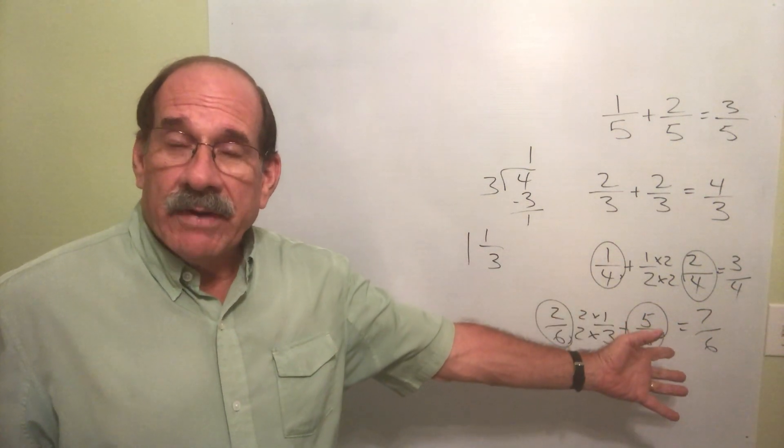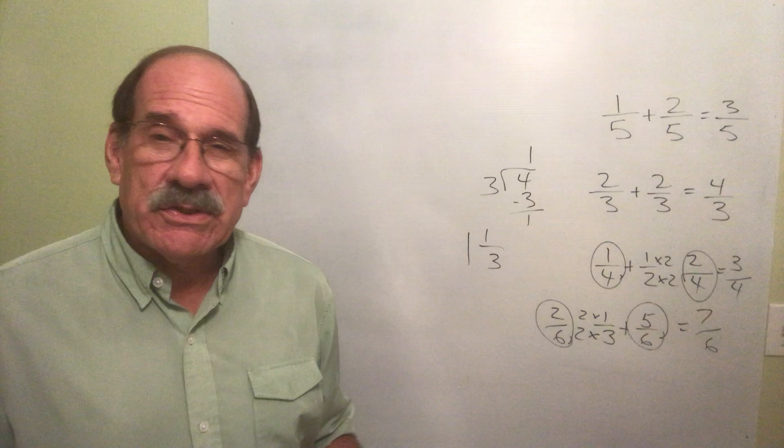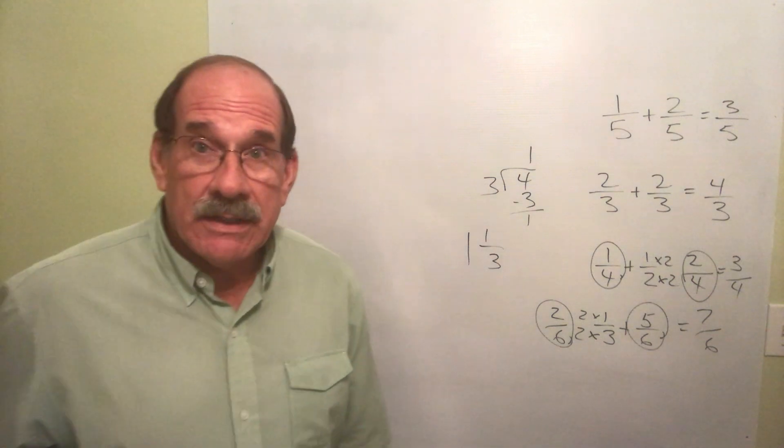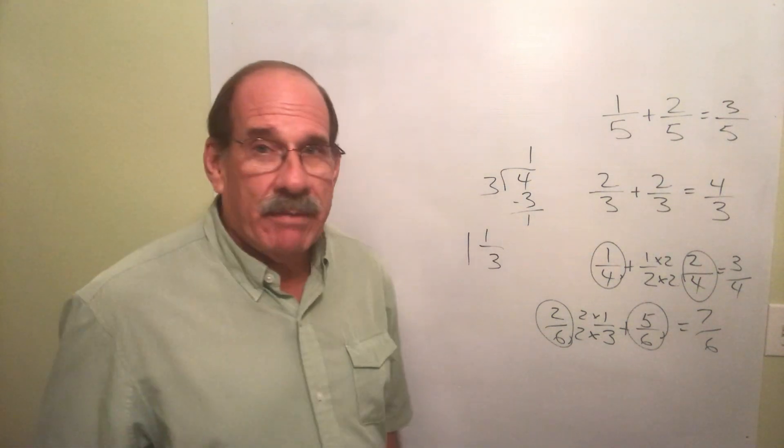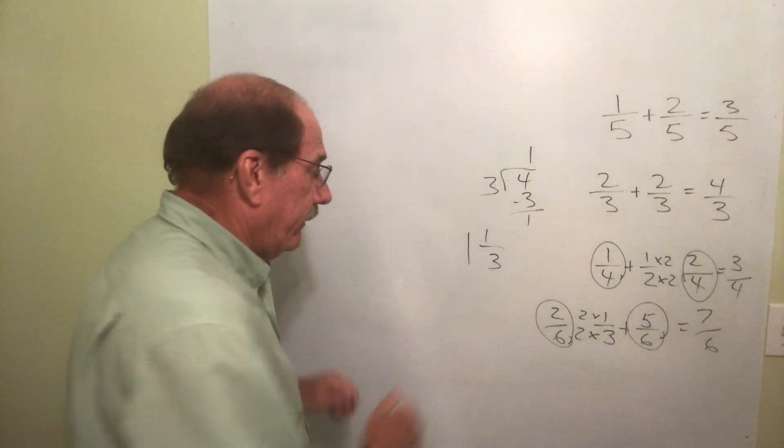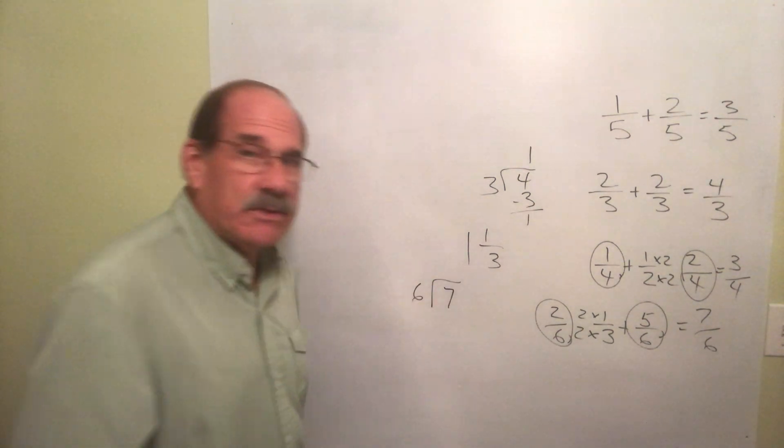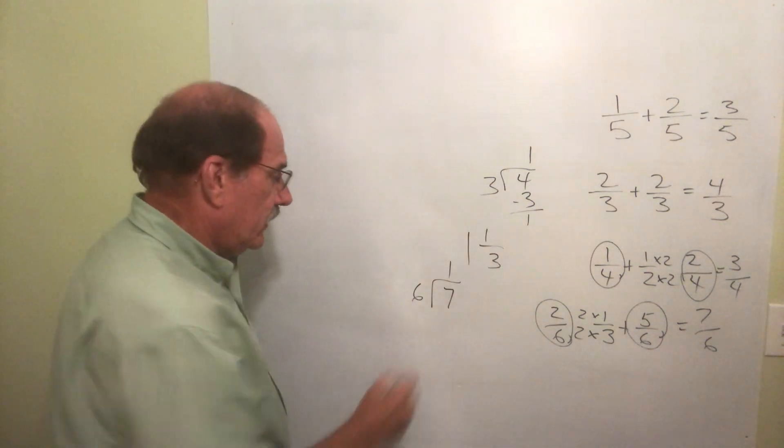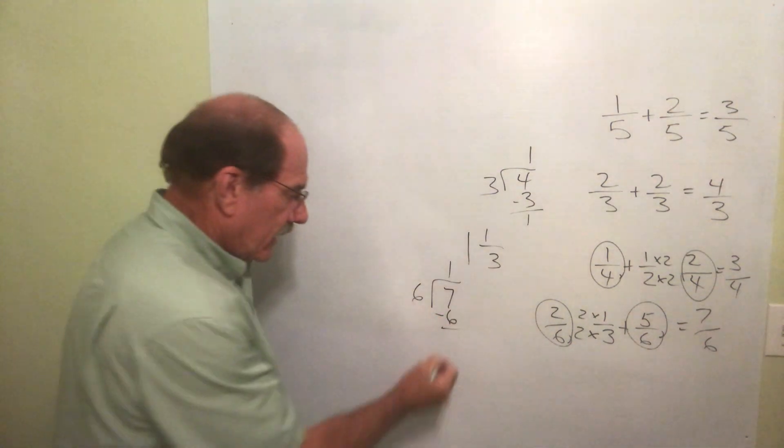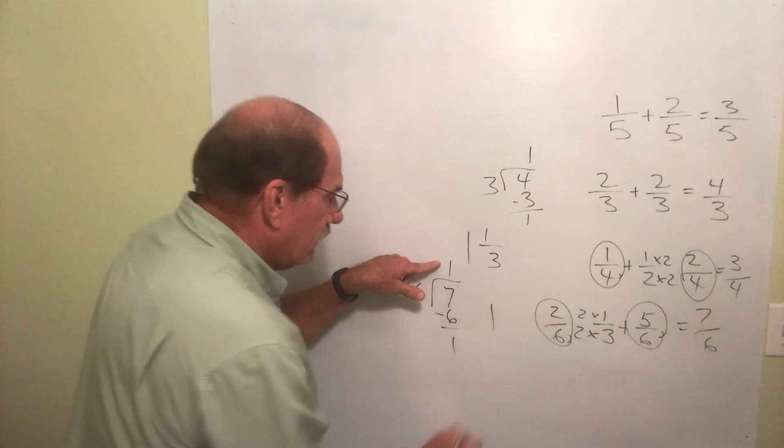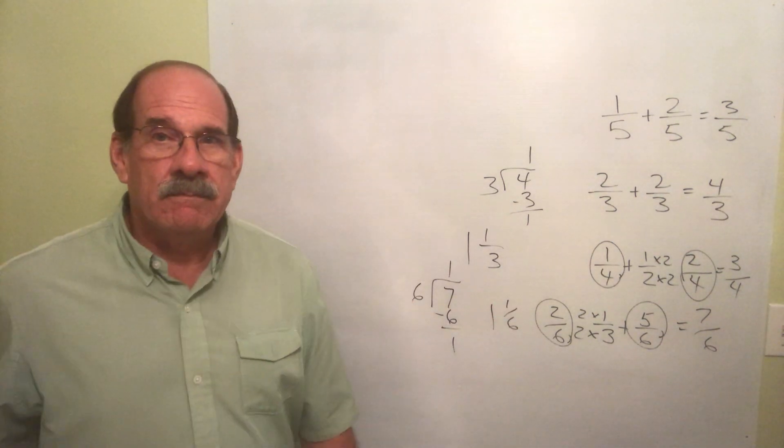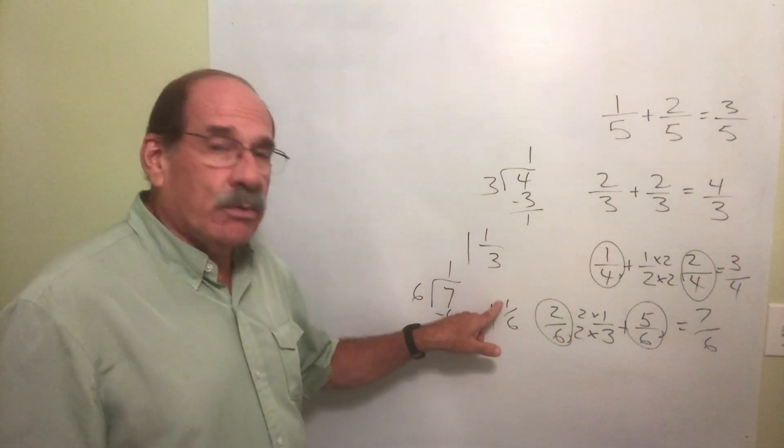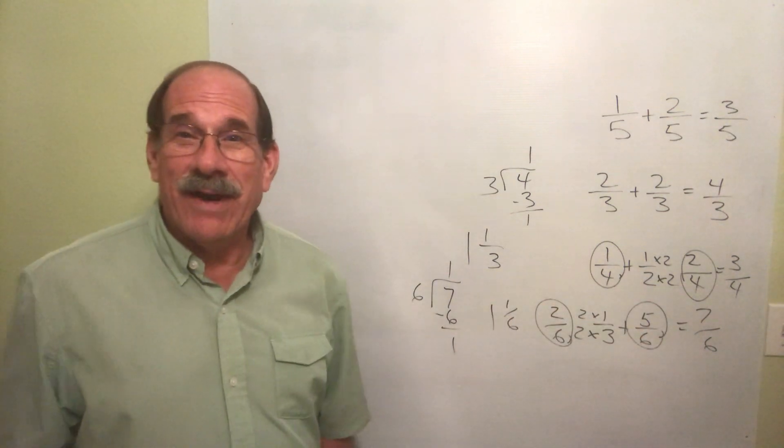The top number's bigger. That's an improper fraction. I've got to convert that to a mixed number. Seven divided by six. If you can't do them in your head, put it down: seven divided by six. Well, six goes into seven one time. One times six is six. I subtract, and that's one. So it's one and one-sixth. I have the same denominator.